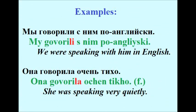Past tense examples: Мы говорили с ним по-английски — We spoke with him in English. Она говорила очень тихо — She spoke very quietly.